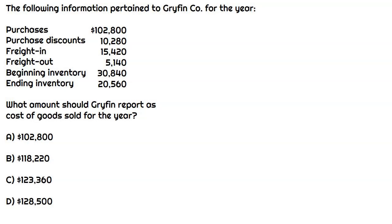In this question, we have Griffin, and it gives us some information for the current year. Ultimately, we need to calculate cost of goods sold for the year. When we look through the information we're given, we're given some information about purchases, freight in, freight out, as well as beginning inventory and ending inventory.